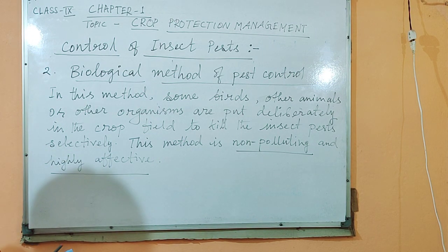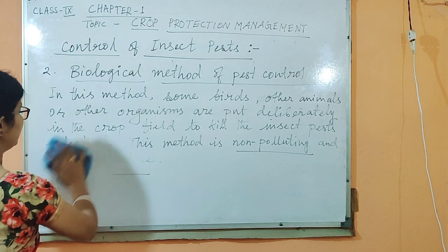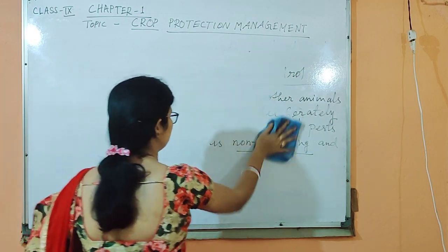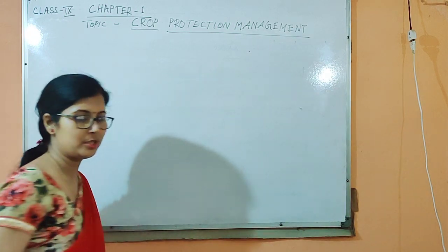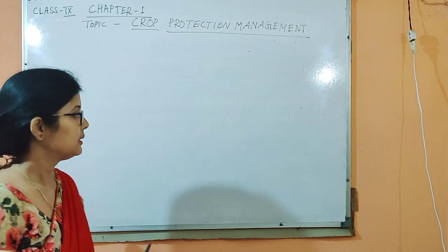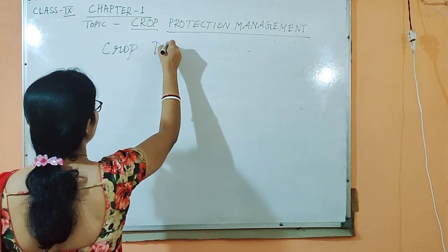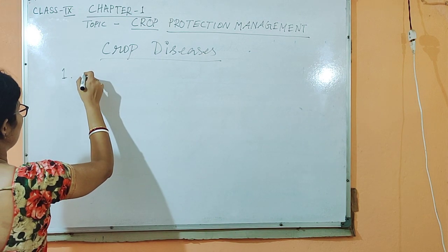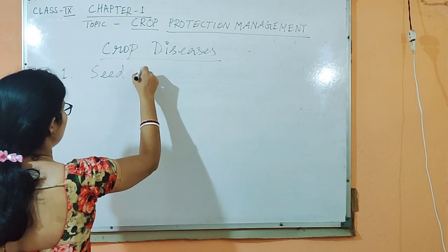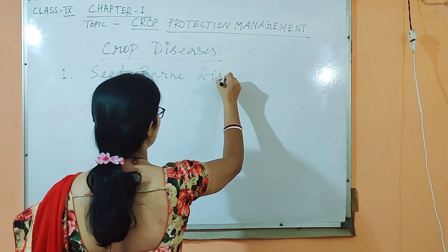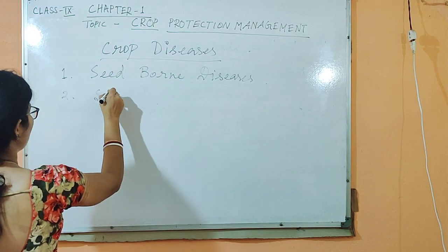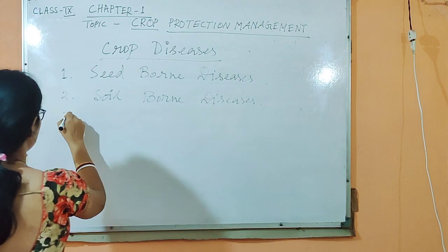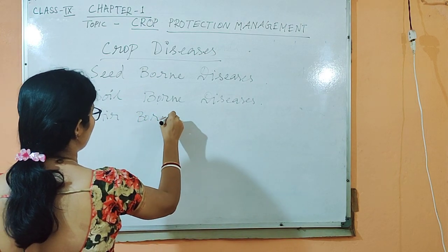Not only insect pests, there are also crop diseases. Under crop diseases, there are disease-causing pathogens which cause different diseases. We can categorize the crop diseases as follows: Number 1, seed borne diseases. Number 2, soil borne diseases. And number 3, air borne diseases.